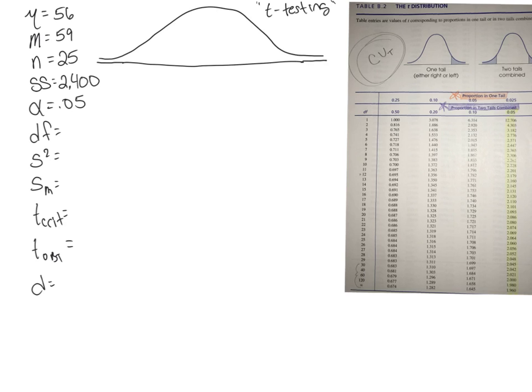Last year's class had a mean score of 56, and the sample of 25 seniors from this year's class produced an average score of 59 with a sum of squares of 2,400. On the basis of this sample, can the psychologist conclude that this year's class has a different level of optimism than last year's class?